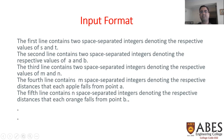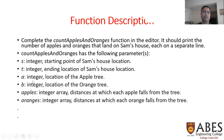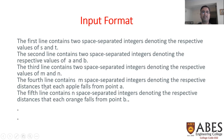The fourth line contains M space-separated integers denoting the respective distances at which each apple falls from point A. The fifth line contains N space-separated integers denoting the distances at which each orange falls from point B.